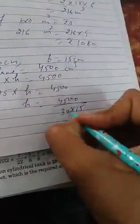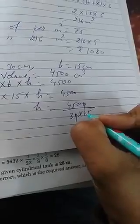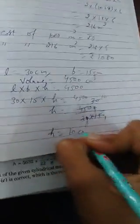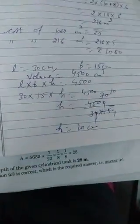Divide with 30 into 15. Zero cancelled. 15 ones are 15. 15 threes are 45, 30. 3 ones are 3. 10 threes are 30. Height is 10 centimeter.